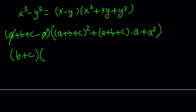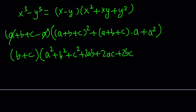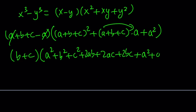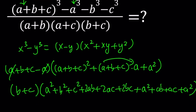Let's go ahead and simplify this expression right here. If you go ahead and expand it, we're going to get a squared plus b squared plus c squared plus 2ab plus 2ac plus 2bc. And then we're going to get a times a — if you distribute — a squared plus ab plus ac, and then finally we're going to get another a squared.